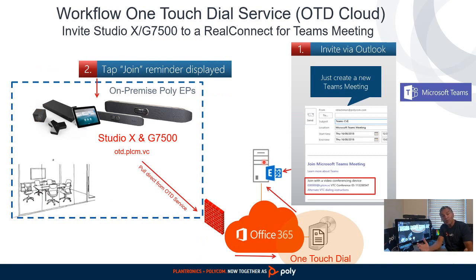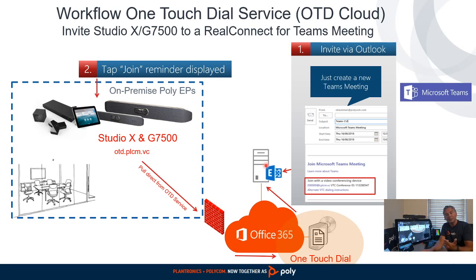Here you see you've got your Studio X family or your G7500 — on the other side you've got your Teams client or your Outlook client. There you schedule that meeting — make sure you've got that RealConnect information in here, as you see here, this is key. This will end up in the mailbox, so you've got probably a resource mailbox, but you can also test this with a user mailbox. Usually in production a resource mailbox makes more sense because it's able to respond automatically to your invites. The devices will pull that mailbox through One Touchdown, and as it comes back to the endpoint it will show you that join button.